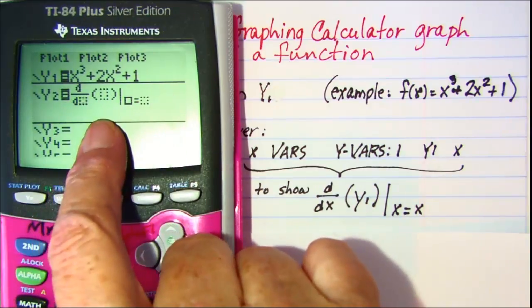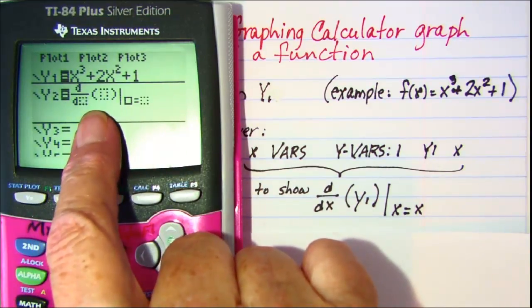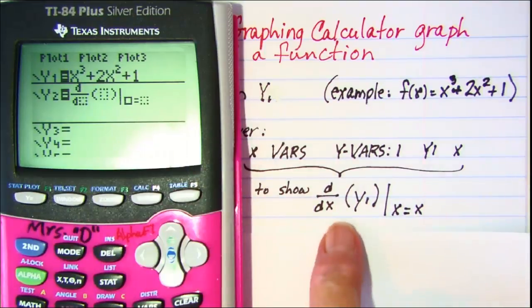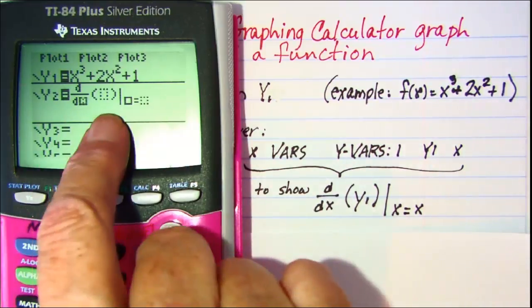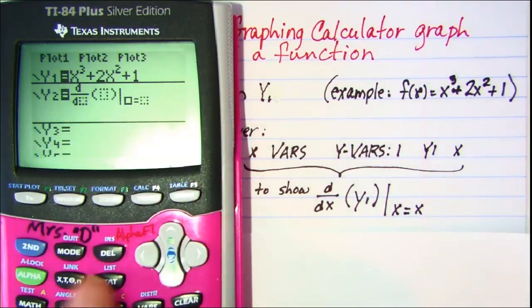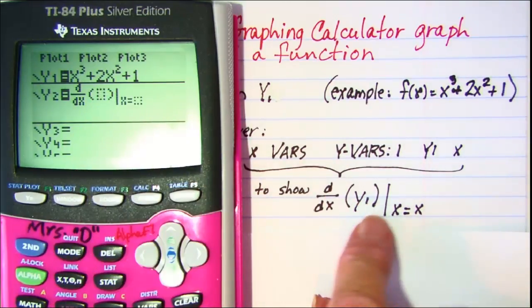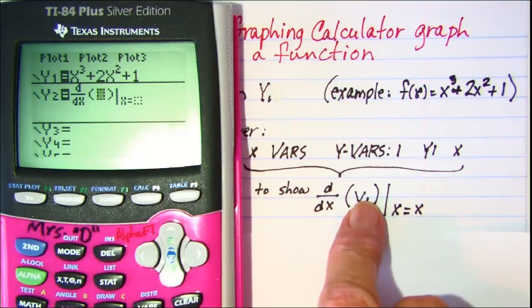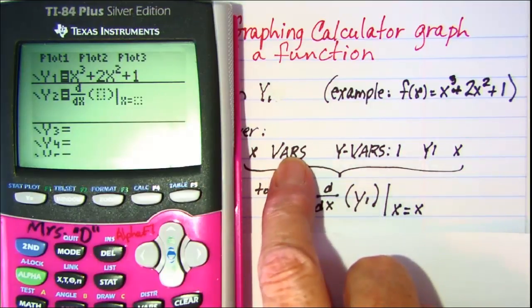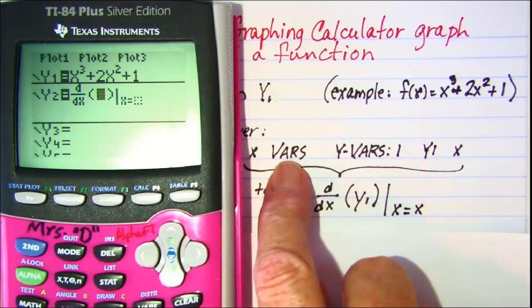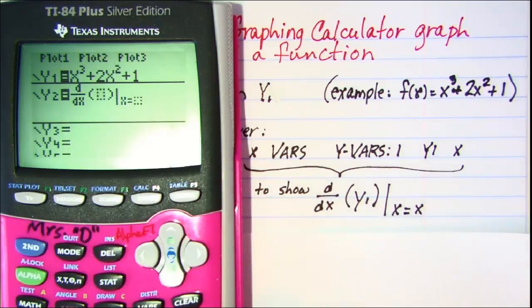You can just choose 8, but math 8 is nDeriv. When we press enter, this newer edition gives me this notation already to be filled in. So we want to put an x because it's doing the derivative with respect to x.